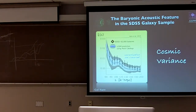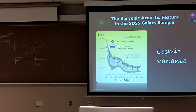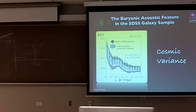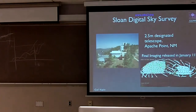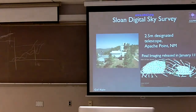I mentioned cosmic variance a few times — those are the gray bands that you're looking at, representing one and two sigma uncertainties. Even though we have a really huge chunk of the universe, it's still not large enough to make precision measurements. The reason is we're looking at perturbation modes within a box, and like any other modes in a box, you want a larger box to get more modes and better statistics. That's why surveys are getting larger and larger volumes.